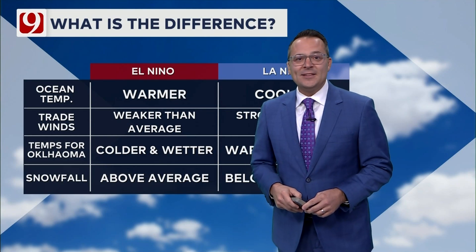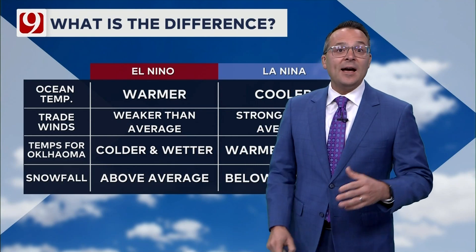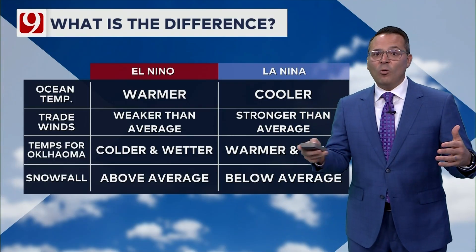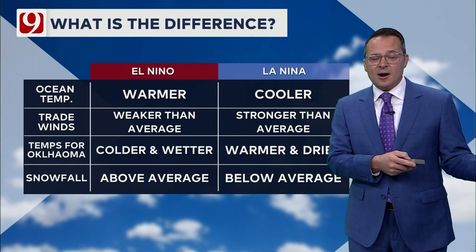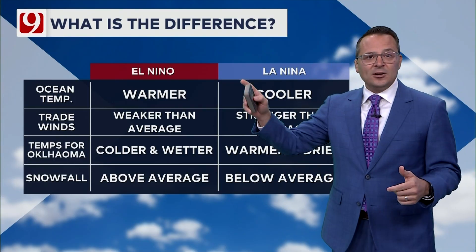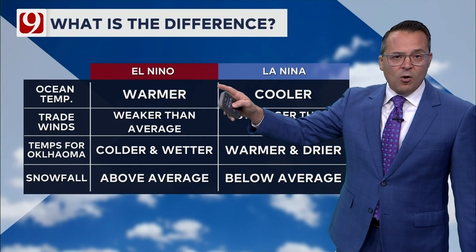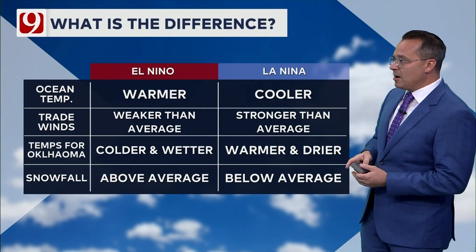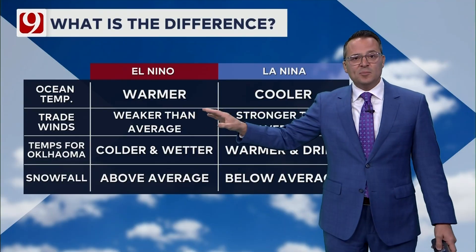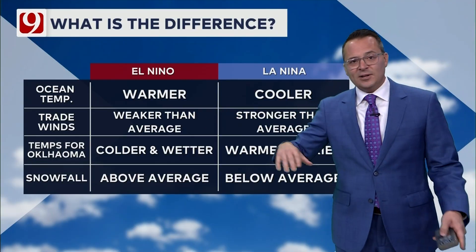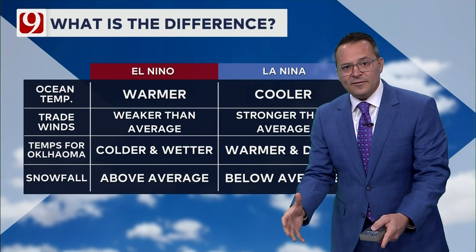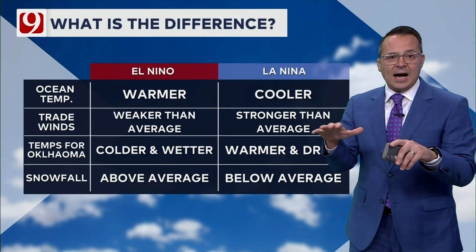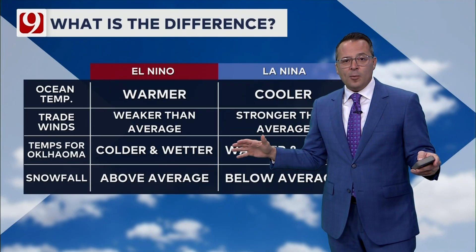Today we're going to talk about the difference between El Niño and La Niña. It's the temperature of the water west of South America in the Pacific. El Niño is warmer than average waters there west of South America because of the trade winds being weaker than average, so you have less cooler water coming up from underneath because it all sits on the top.